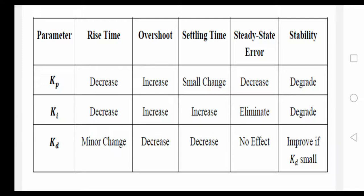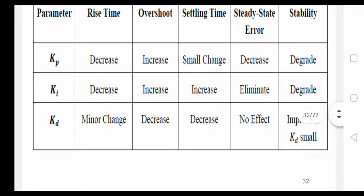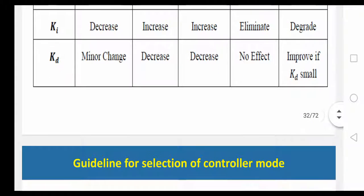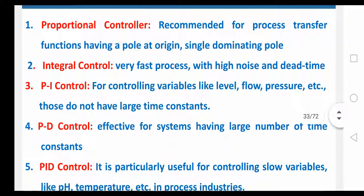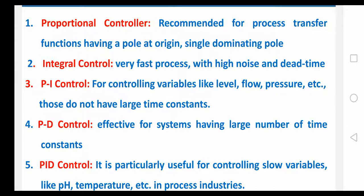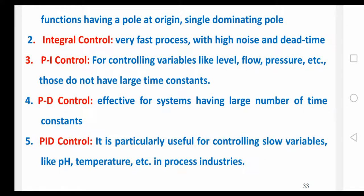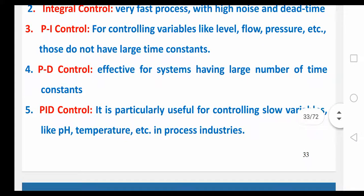Stability: in proportional and integral controllers it degrades, but in the case of derivative controller it improves if Kd is small. Which type of controller you need to select? Proportional controller is recommended for processes with a transfer function having a pole at origin or single dominating pole. Integral controller is for a very fast process with high noise and dead time. PI controller is for controlling variables like level, flow, pressure, etc., those that do not have large time constants. PD controller — combination of proportional and derivative — is effective for systems having a large number of time constants.